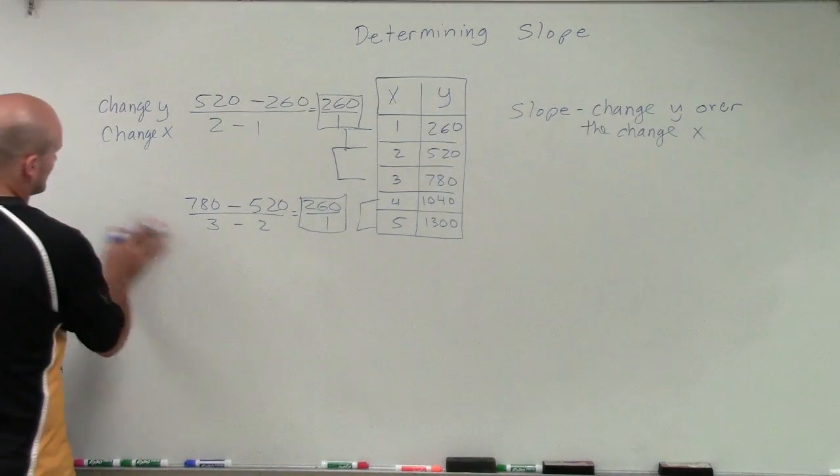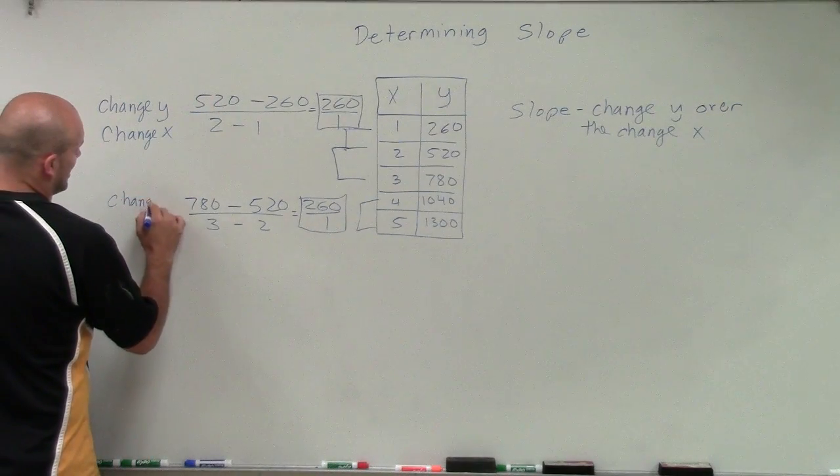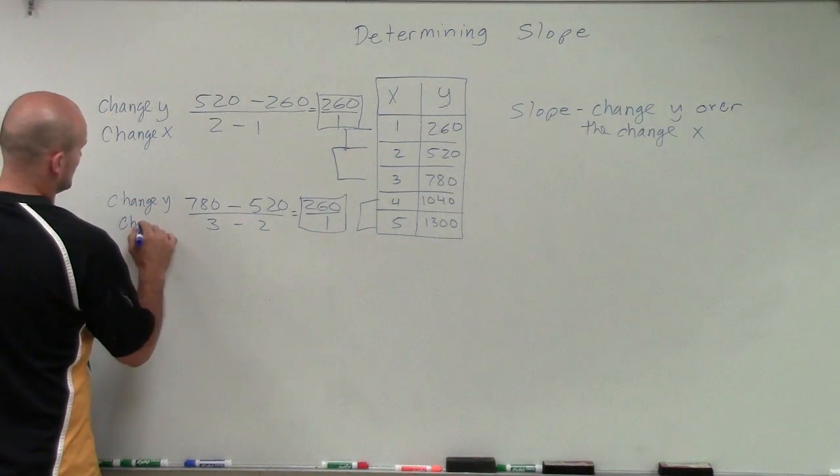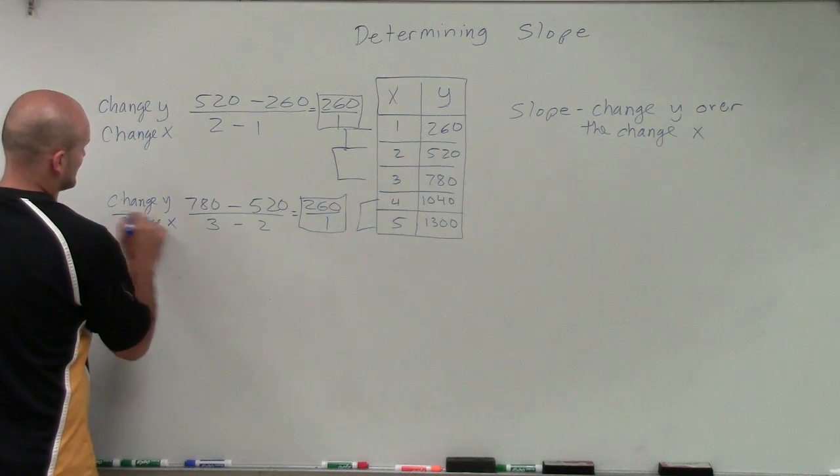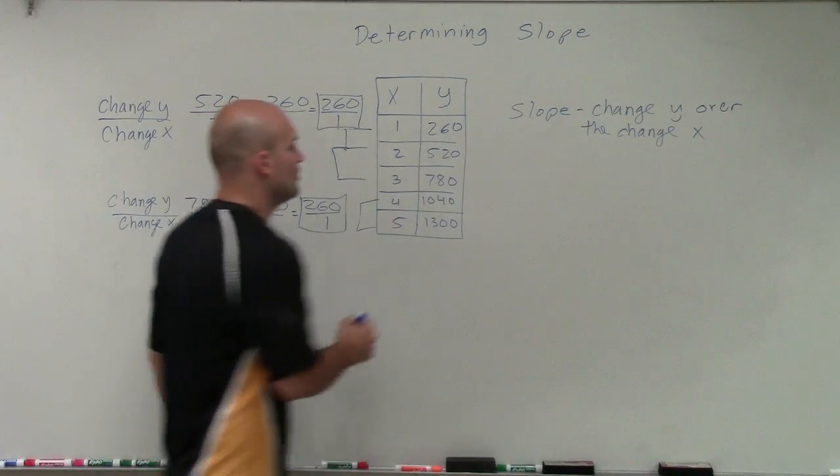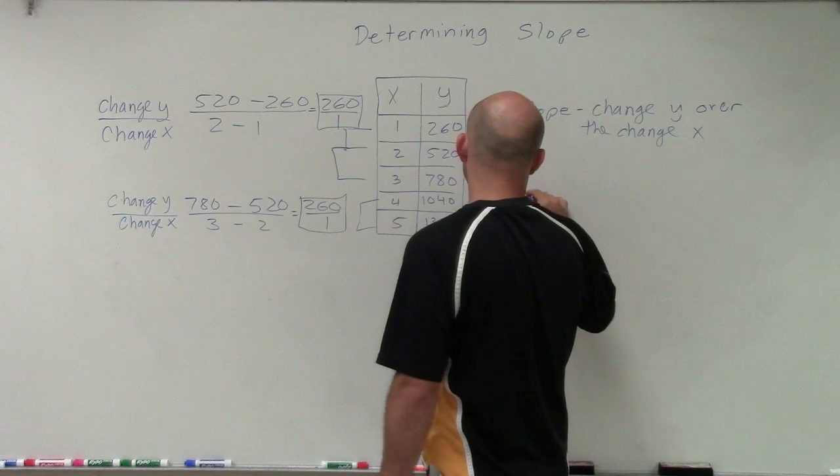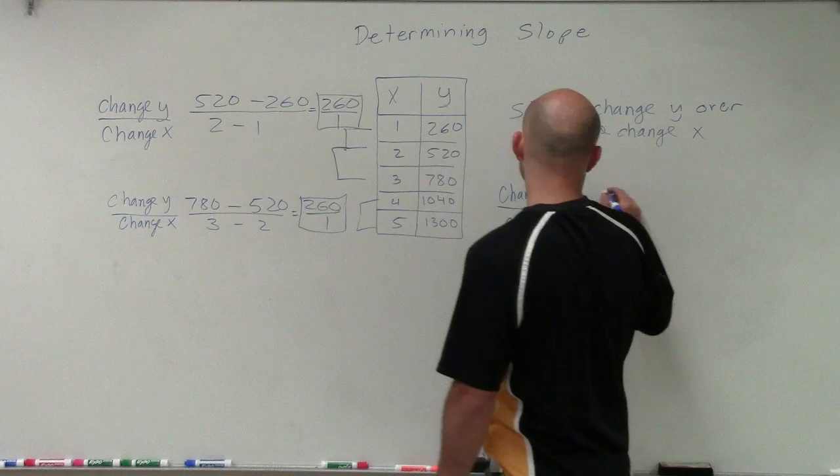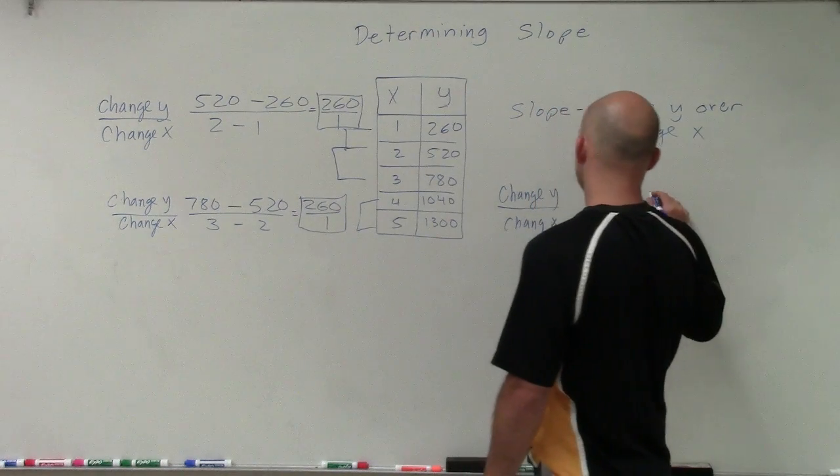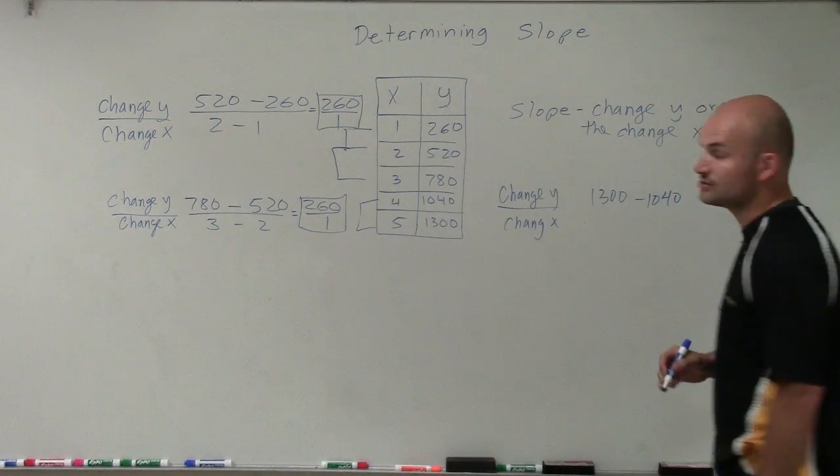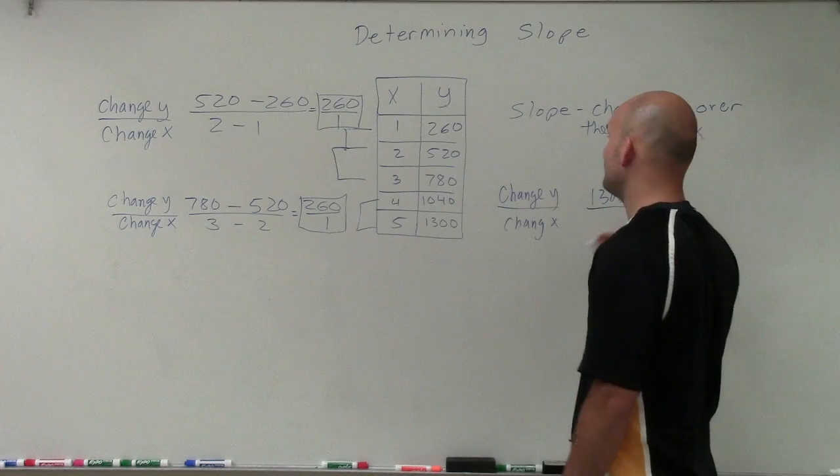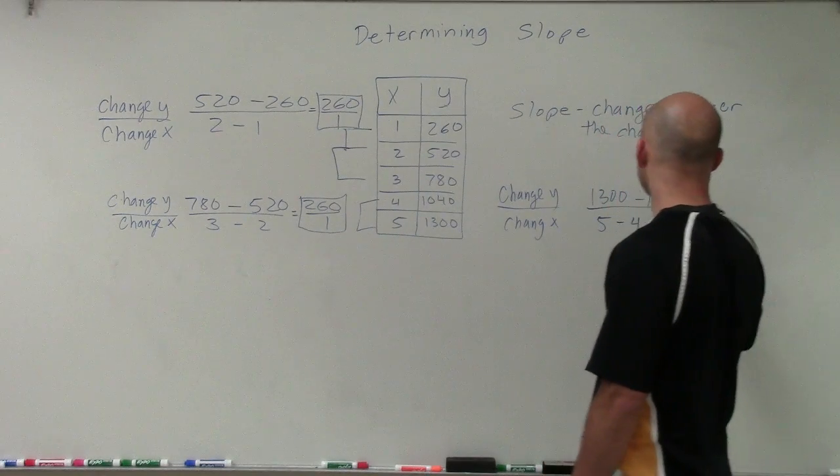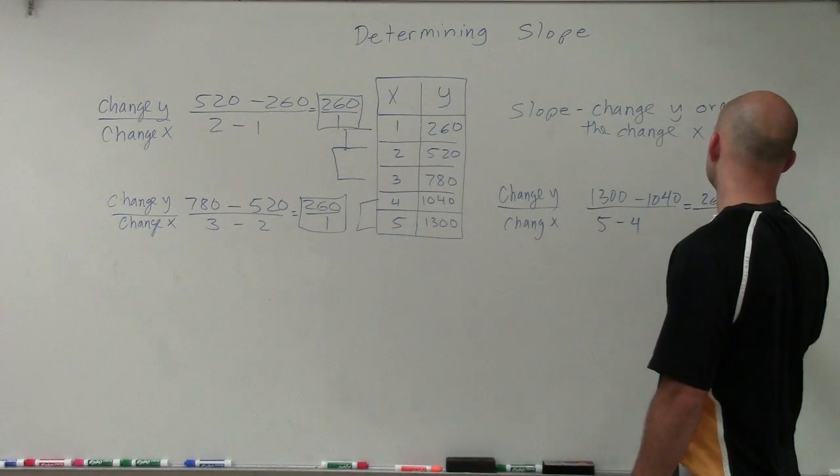That is the change in y over the change in our x. So the change in y over the change in x. I have 1300 minus 1040, which is the change in y, over my change in x, which is 5 minus 4. Well, again, that equals 260 over 1.